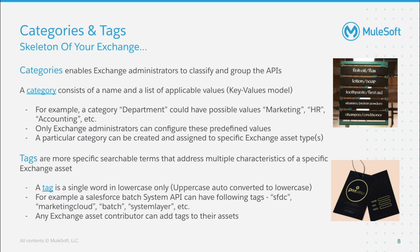Categories can only be created by exchange admins. Once created, exchange contributors who own the APIs can apply them. Admins can either select what type of asset a category can be assigned to or apply it to all assets. Tags, on the other hand, are searchable, meaningful, and relevant keywords that define characteristics of a specific API. A tag is similar to a price tag on clothes and can also be compared with hashtags on social media. Tags classify API-specific traits and can drive curated results — a tag is a single lowercase word.